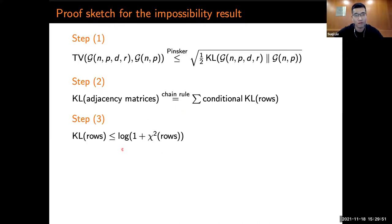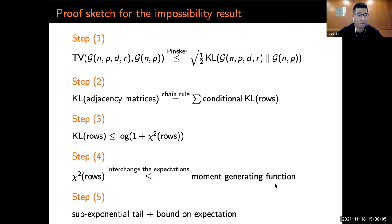With this inequality, we can then upper bound the KL divergence by a chi-square divergence. Later, using a second moment method and interchanging the expectations, we arrive at some moment generating function of a quantity. Finally, by a sub-exponential tail of this quantity and a bound on the expectation, we obtain an upper bound on the total variation distance.